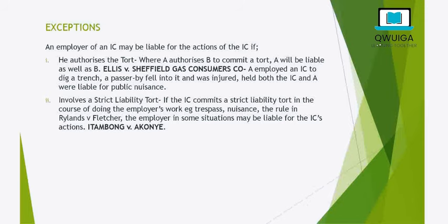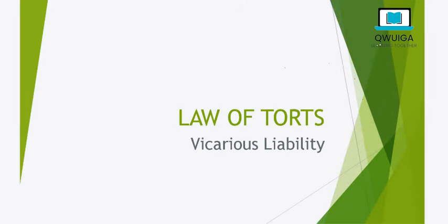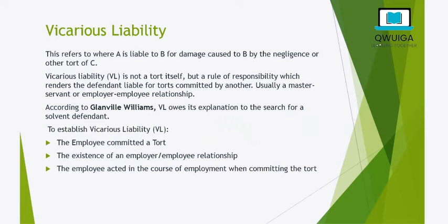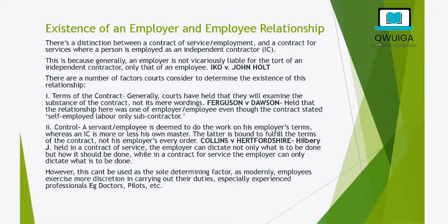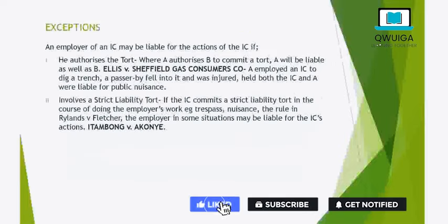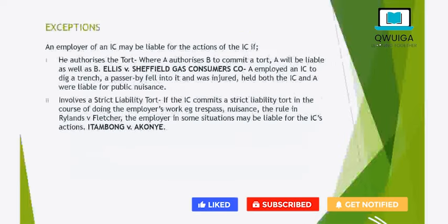We have now gone through the requirements to prove Vicarious Liability: that the employee committed a tort, the existence of an employer-employee relationship, and that the employee acted in the course of his employment while committing the tort. We have also gone through the subcategories under each requirement while pointing out important cases, authorities, and principles. This brings us to the end of Vicarious Liability — see you in the next module.